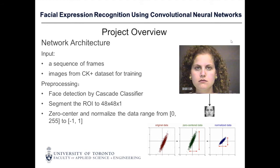A human face is detected from each input image and the region of interest is cropped. The image is then converted to a 48 by 48 grayscale image. The values of all pixels are zero-centered and normalized.